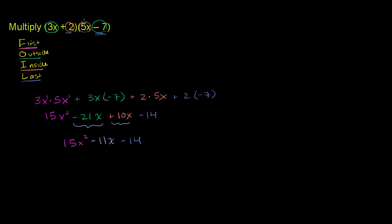So we could distribute the 5x minus 7, this whole thing, onto the 3x plus 2. Let me just change the order, since we're used to distributing something from the left. So this is the same thing as 5x minus 7 times 3x plus 2. I just swapped the two expressions.